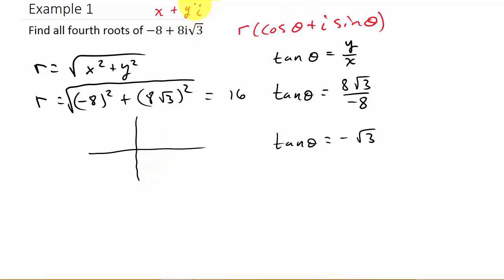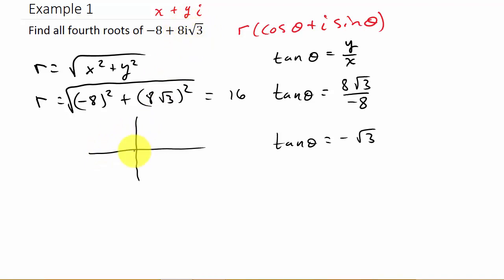Well, the first thing we need to do is graph this thing. It's negative 8, 8 square root of 3. So if I graph it — this is the real axis, this is the imaginary axis. The real part is negative 8, so I move over negative 8. The imaginary part is 8 square root of 3, so I go up 8 square root of 3. We can see that my angle theta is in the second quadrant.